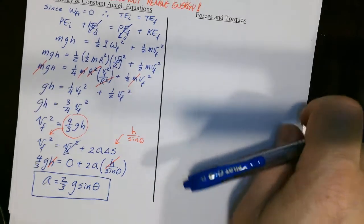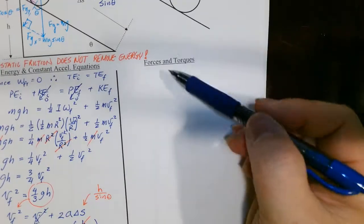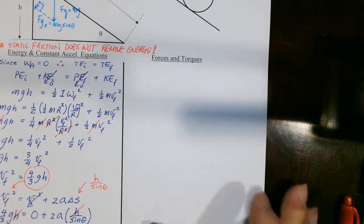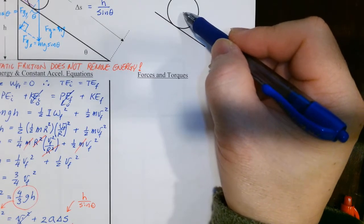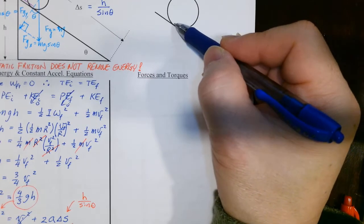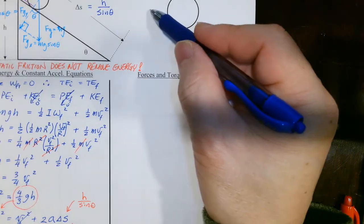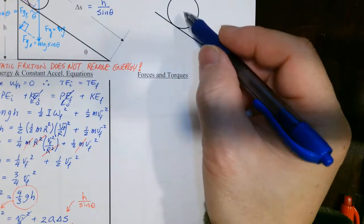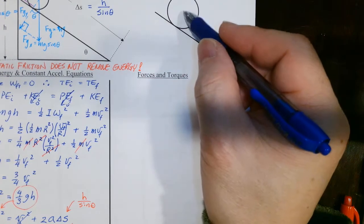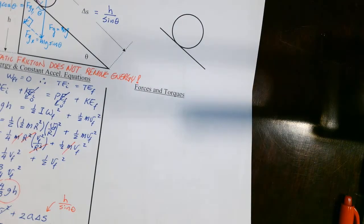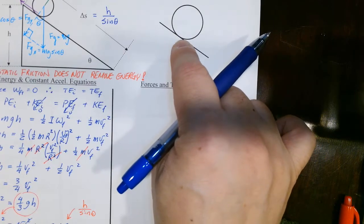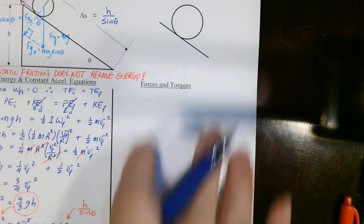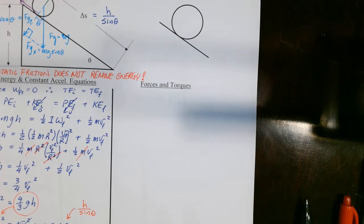So the acceleration down the incline is a = 2/3·g·sinθ. We don't have time to do the dynamic method today — we'll do that next time. But you could try it on your own: set the pivot point at the center of the axle, identify F_friction causing torque, apply sum of forces = ma and sum of torques = I·alpha. We'll meet back on Friday. All right.